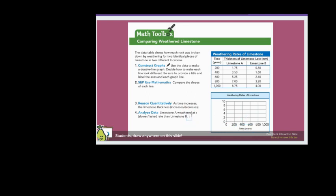Now I'm going to do the same thing over on the y-axis. So the y-axis is the thickness of limestone lost in millimeters. So thickness of limestone lost in millimeters. And I'm going to turn it on its side and move it over.